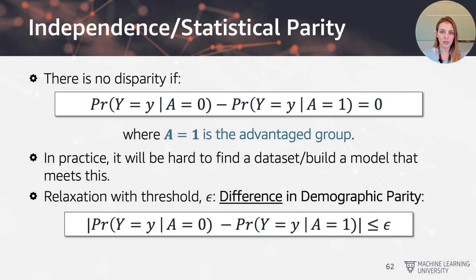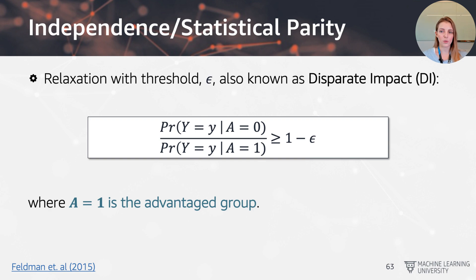This relaxation gives us the difference in demographic parity: the absolute difference between the two probability measures should be less than or equal to a threshold epsilon. Another variation is the disparate impact measure, which is the ratio of probabilities, where A equals one is the advantaged group in the denominator. We require the ratio to be greater than or equal to one minus epsilon — this is also known as the four-fifths rule in legal literature, and we'll revisit disparate impact later.